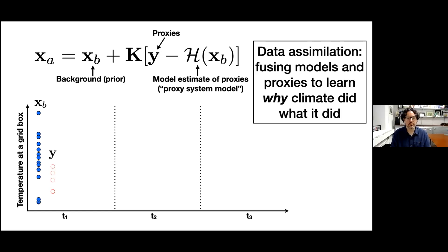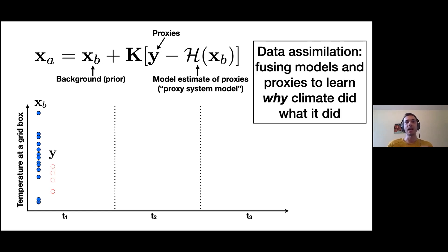The proxy system model is where we go from model variables — temperature, precipitation, etc. — into the space of the proxy. You need to effectively grow a tree ring, or grow a coral, or get isotopes out of a model, or go from precipitation to water isotopes at the location where you have ice cores. This is how we transform model variables into proxy space so we can do the math and subtract the two. There's also a weighting factor called the Kalman gain, which acts as a spatial weighting function, and when you compute this equation you get out the analysis or posterior estimate.